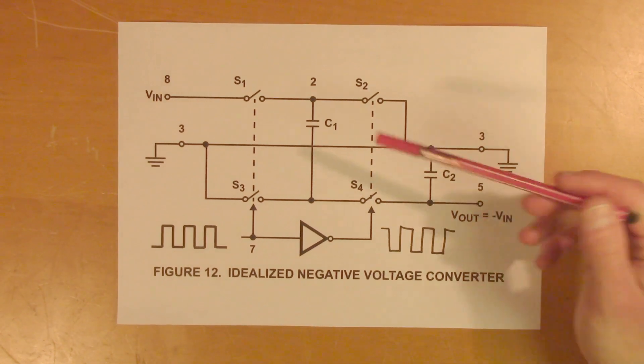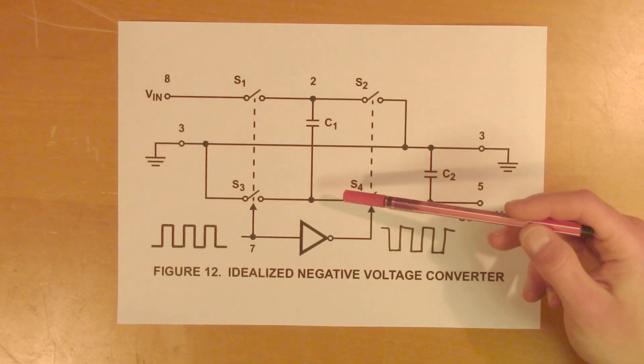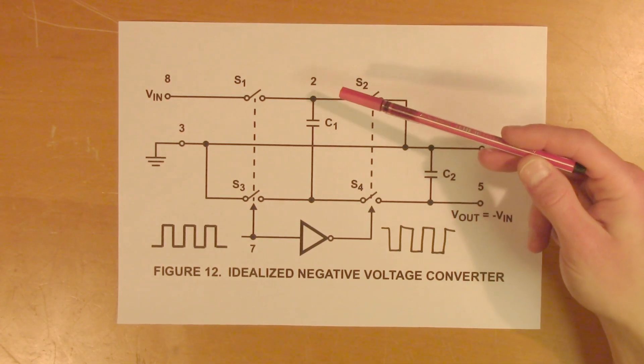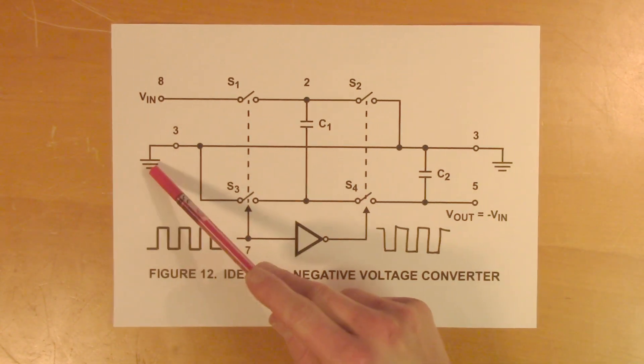To summarize, in the first part of the cycle, C1 will be charged, and it will have a positive voltage above ground.